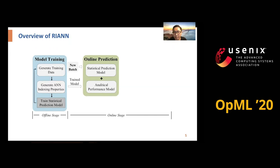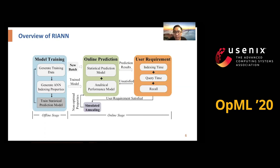In the online stage, given a new batch of data, we use the trained statistical prediction model with an analytical performance model for online prediction. Given user requirements on indexing time, query time, and recall, we use simulated annealing to select optimal properties to meet the user requirements.